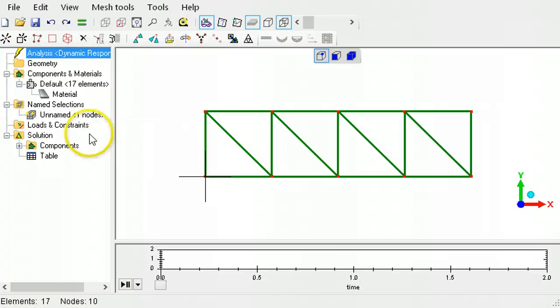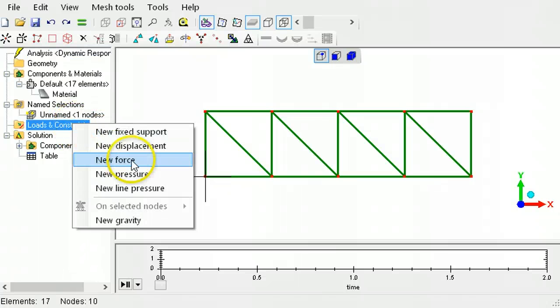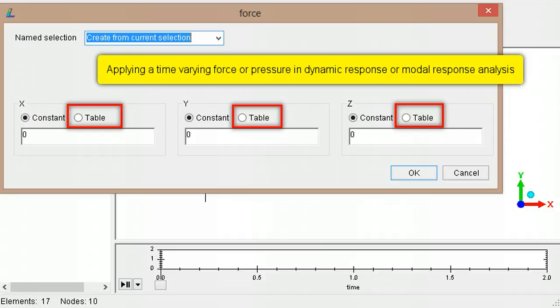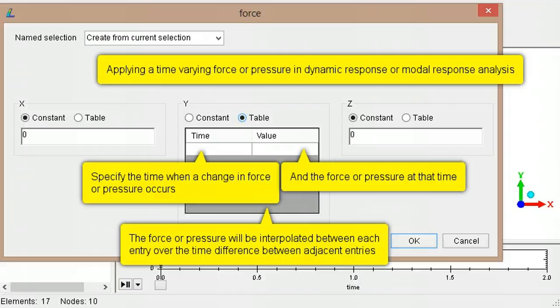To specify the change in force or pressure over the duration of a dynamic response or modal response analysis, use the table option. You don't have to specify a value for each and every time step.